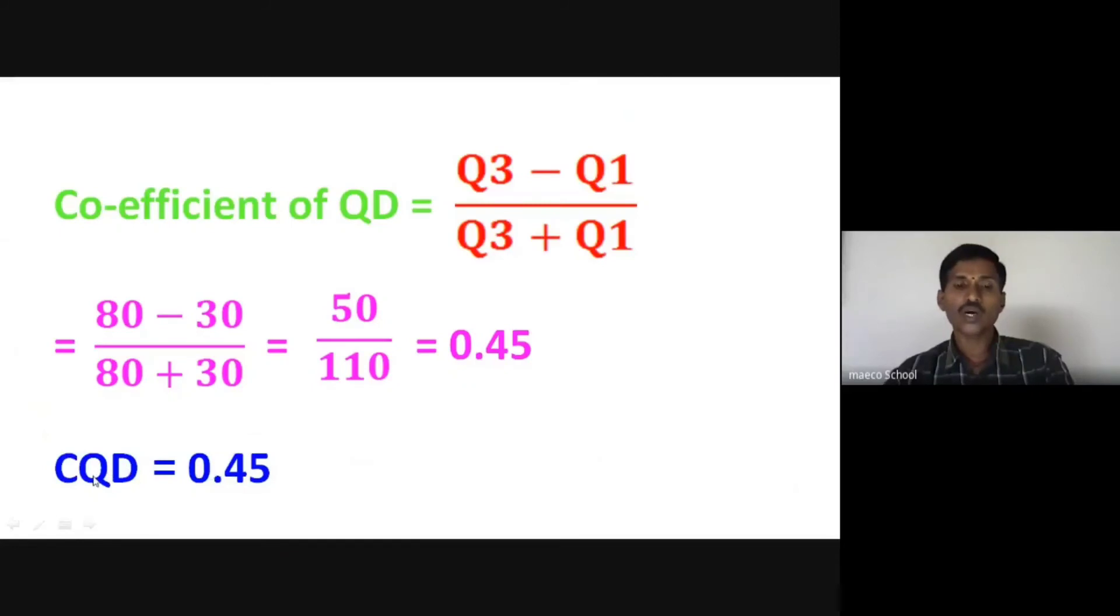We used the formula Q3 minus Q1 divided by Q3 plus Q1 to compute the coefficient. This is the procedure to compute quartile deviation and coefficient of quartile deviation in individual series.